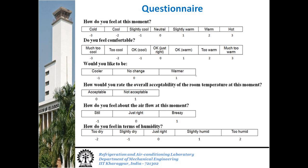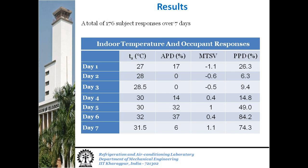Numbers put below the options are the numerical values that were used for later analysis. These numbers were not put in the actual questions though. A summary of some of our observations is given here. One important thing to notice is the large differences between APD and PPD values. APD is the actual percentage of dissatisfaction among occupants as calculated from their survey responses, while PPD is the predicted percentage as calculated from Fanger's model.